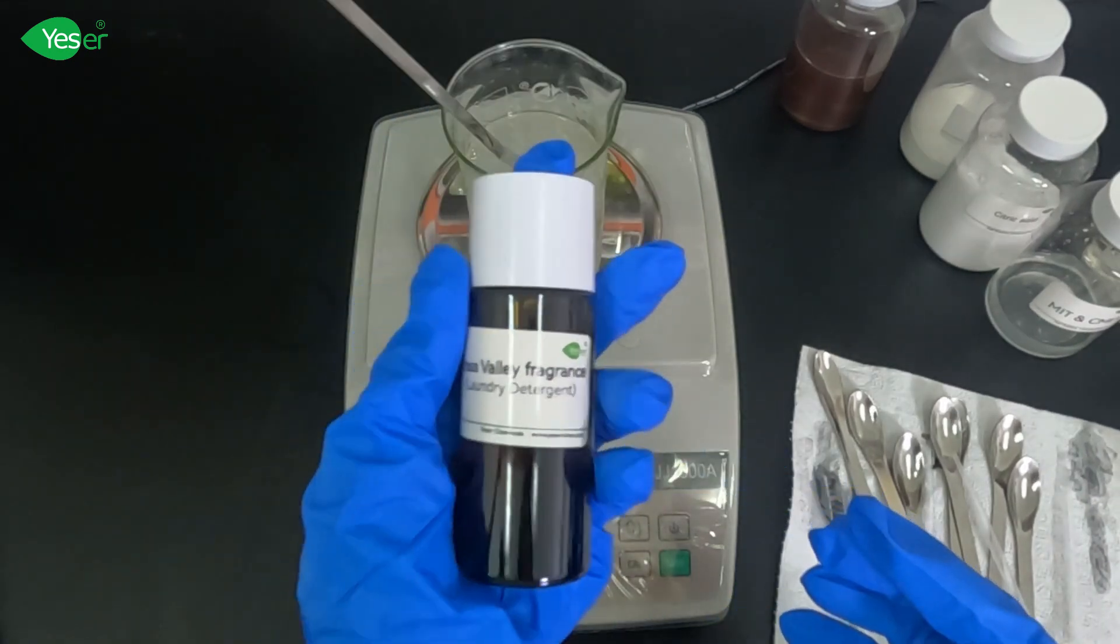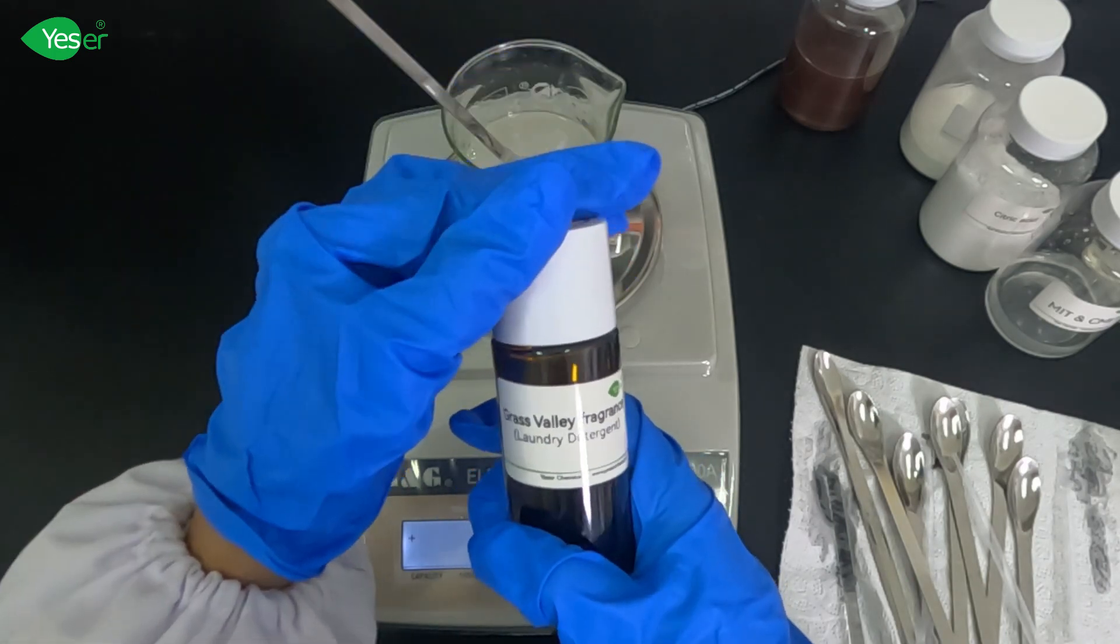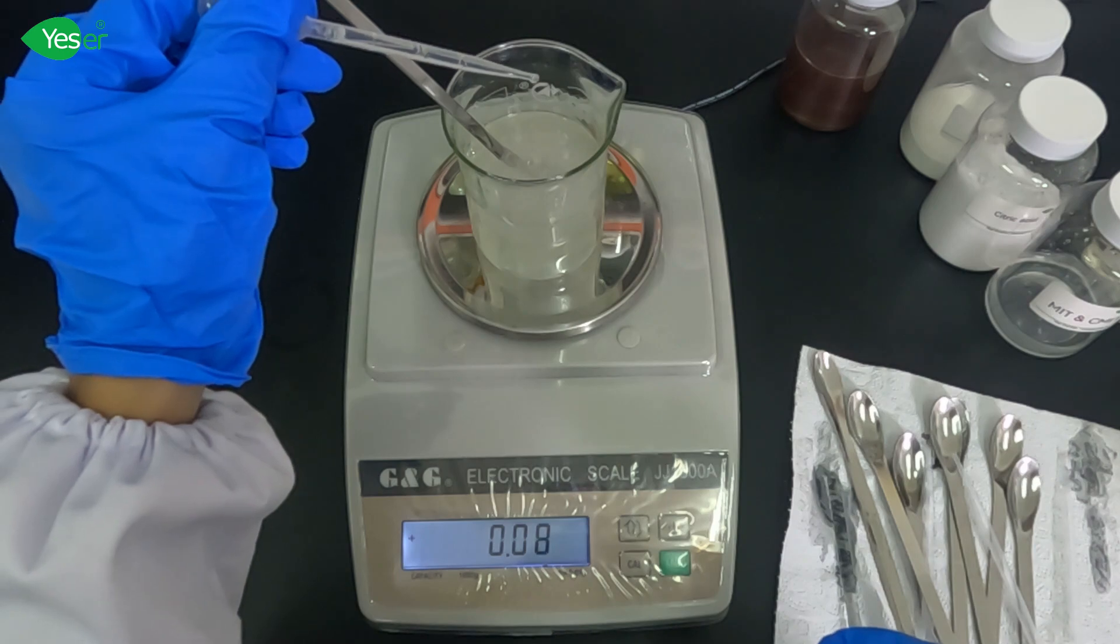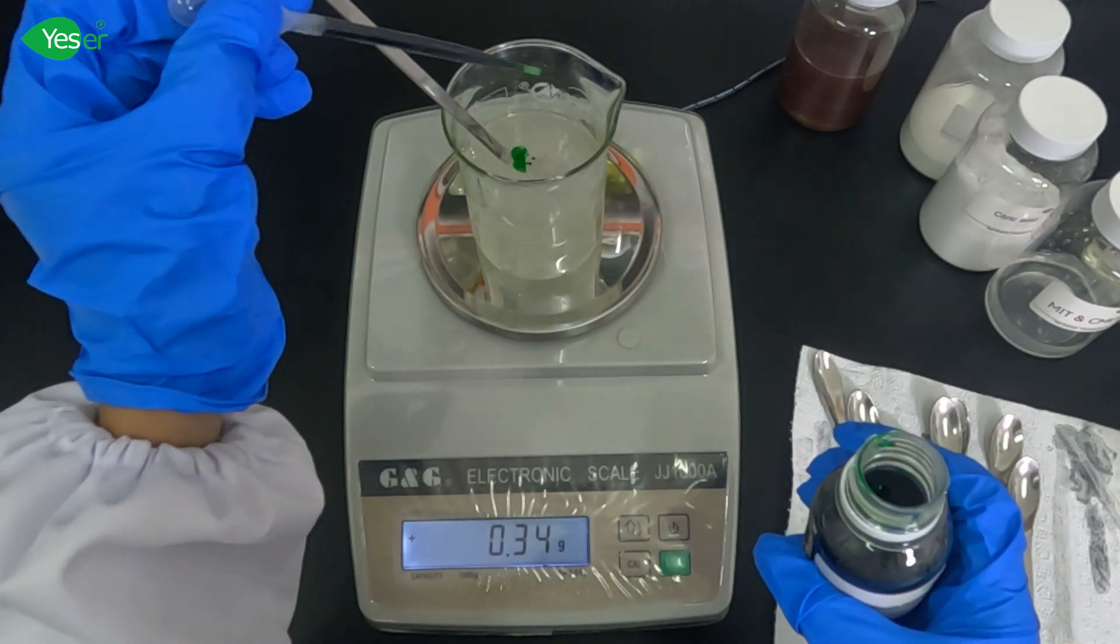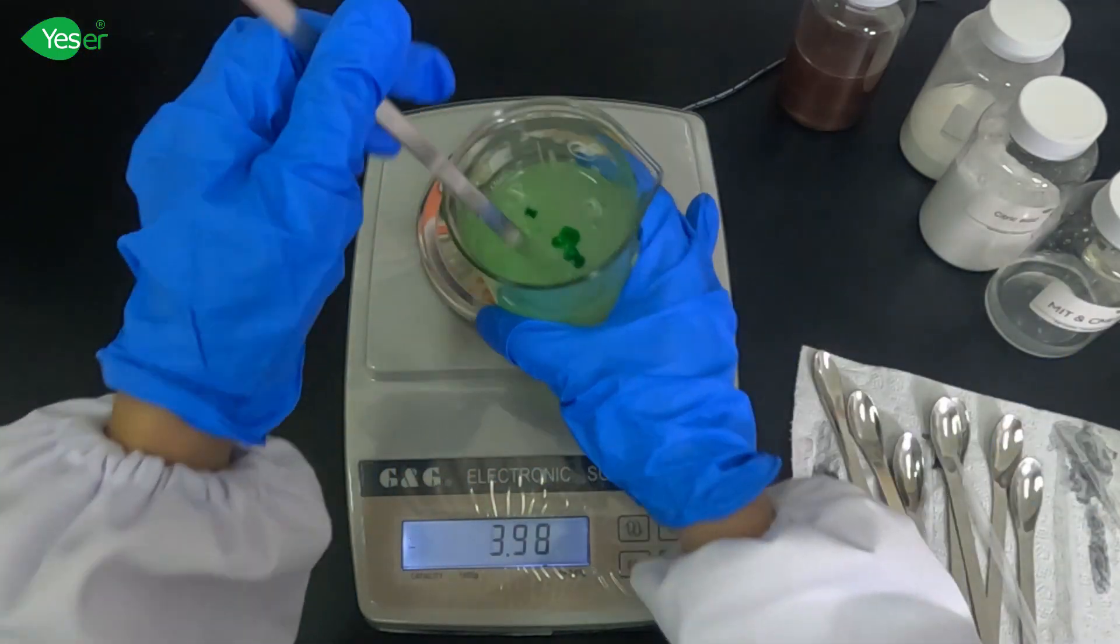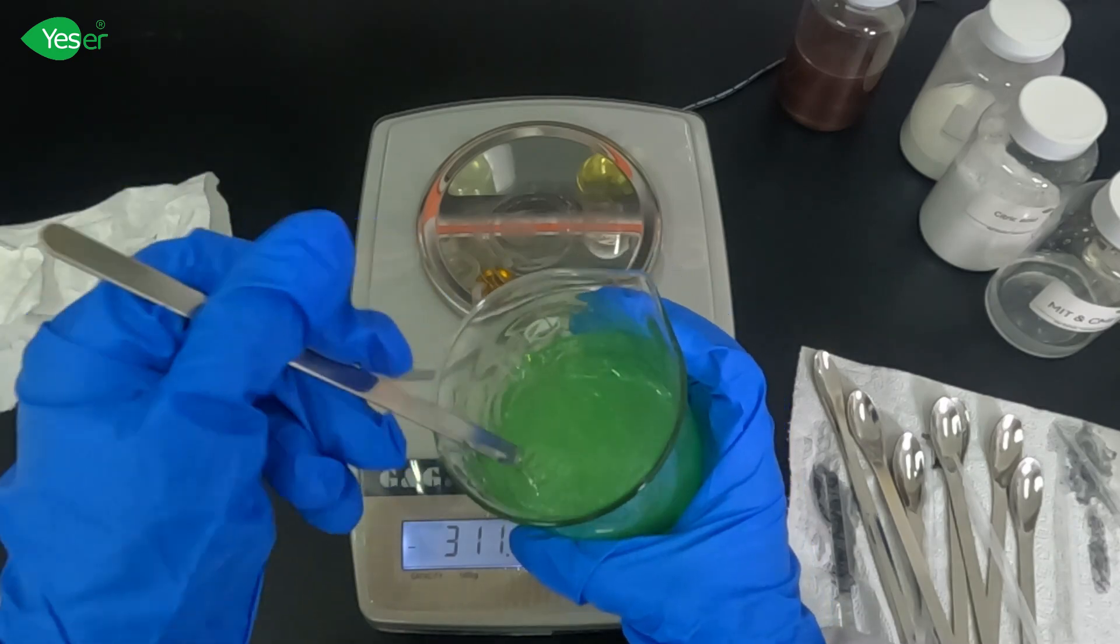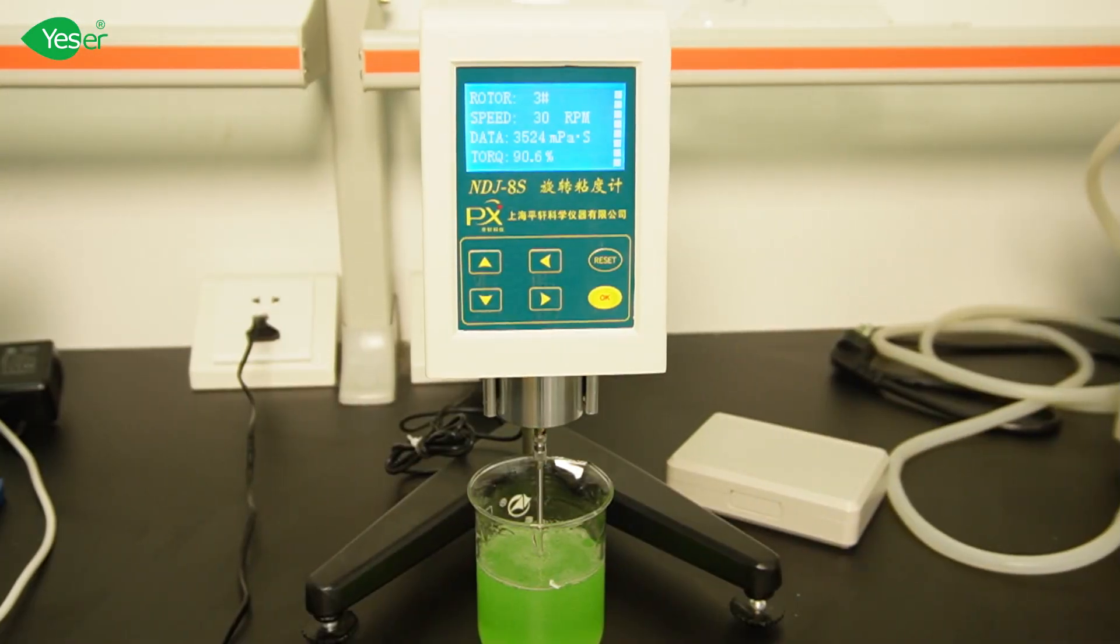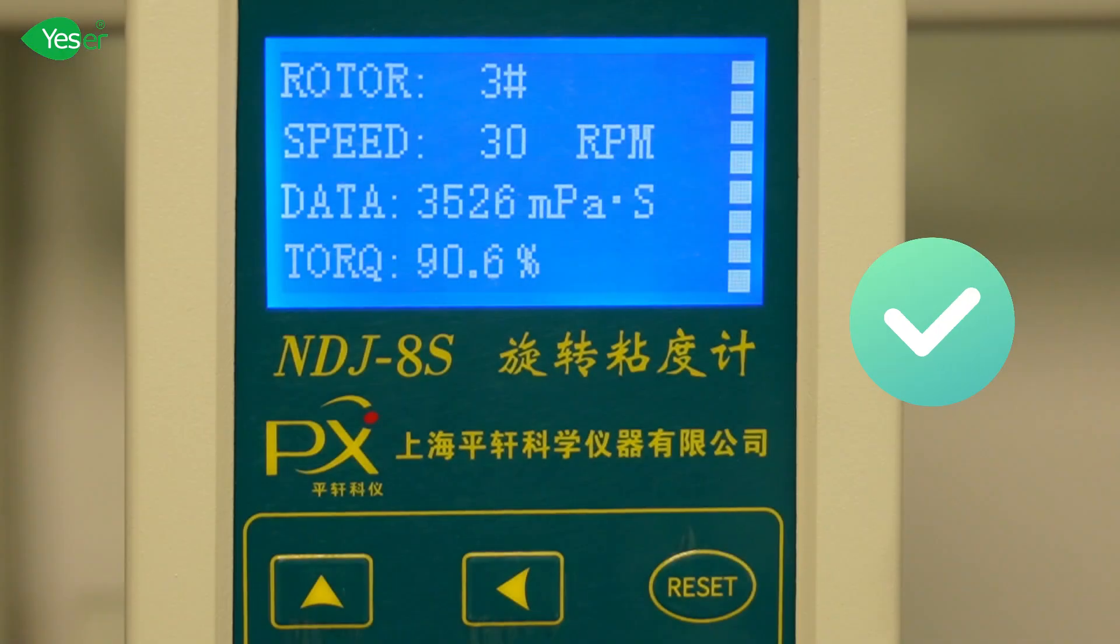For our final touch, we will add our fragrance and dye. Weigh about 0.3 grams of our fragrance or 0.15% for the formula. After we have added the salt and other additives, we can now see the viscosity has reached above 3,000 mPa, which is our desired viscosity for our product.